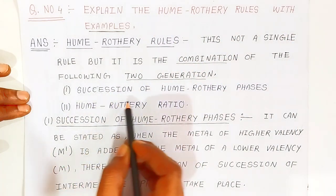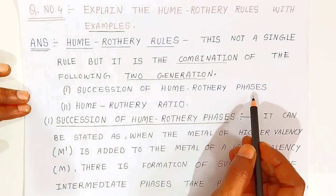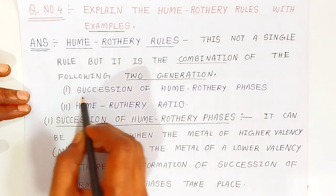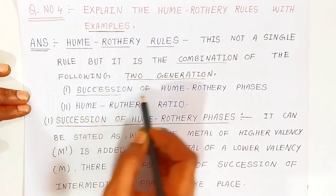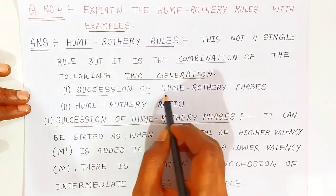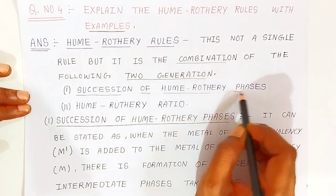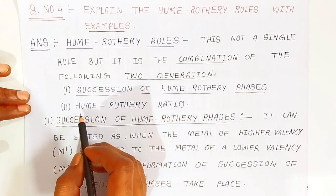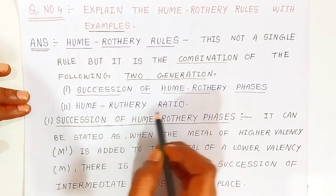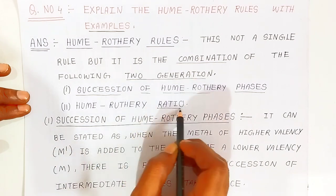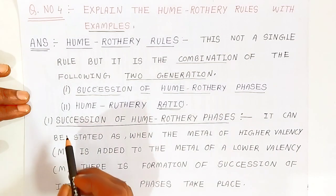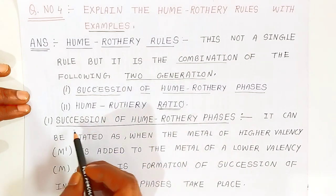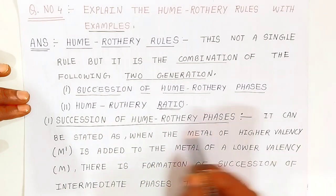The first one is the succession of Hume-Rothery phases. This is the first rule — succession of Hume-Rothery phases — and the second is the Hume-Rothery ratio. First we will see the succession of Hume-Rothery phases.